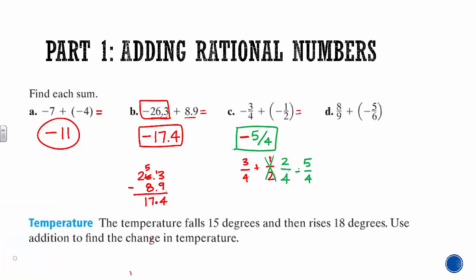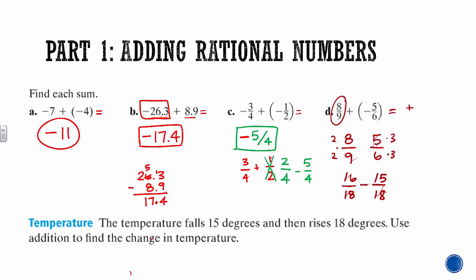Last one: 8/9 and negative 5/6. It might not be obvious which number is bigger because the denominators are different, so let's change to common denominators first. The LCM of 9 and 6 is 18. Multiplying 8/9 by 2/2 gives 16/18, and multiplying 5/6 by 3/3 gives 15/18. Now we can see 8/9 is the bigger number. Since it's positive, our answer has to be positive. Taking the difference: 16 minus 15 gives 1/18, so the answer is positive 1/18.